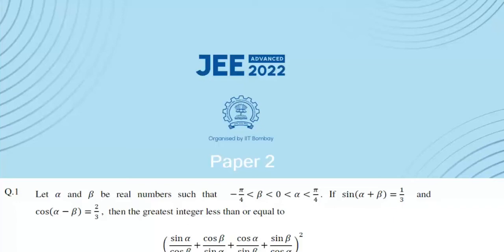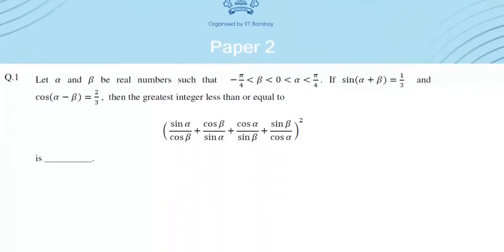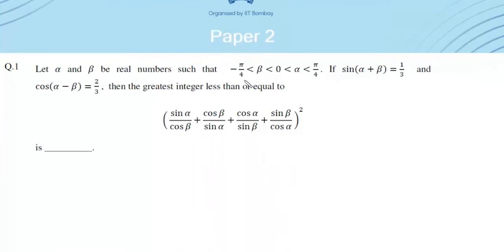Today we will discuss JEE Advanced 2022 Mathematics Paper 2. The first question: let alpha and beta be real numbers such that beta lies in (-π/4, 0) and alpha lies in (0, π/4). If sin(α+β) = 1/3 and cos(α-β) = 2/3, then find the greatest integer less than or equal to the given expression. Suppose this expression is y.